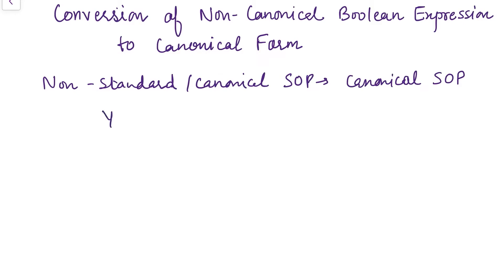Let us say we are given with a Boolean expression Y = ABC + A'B + A'C. Now, how can we convert this into canonical form? We need to follow certain steps. The first step is to identify which variable is missing in which term. In this expression, in the second term variable C is missing, while in the third term variable B is missing.